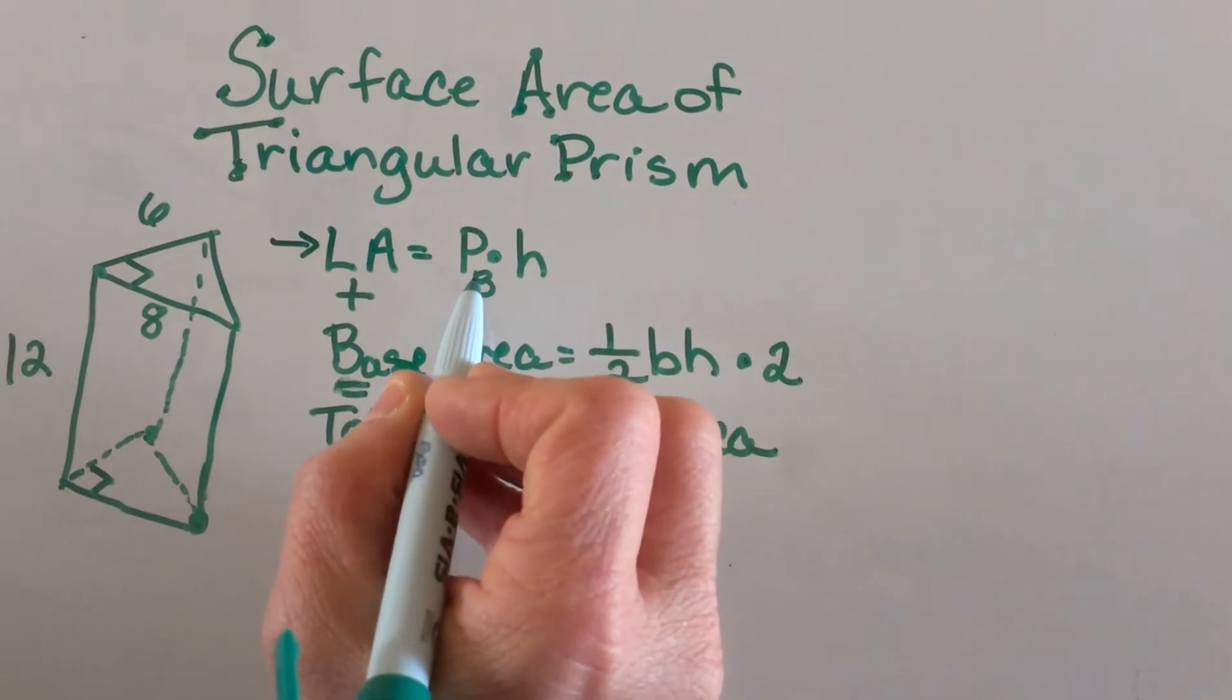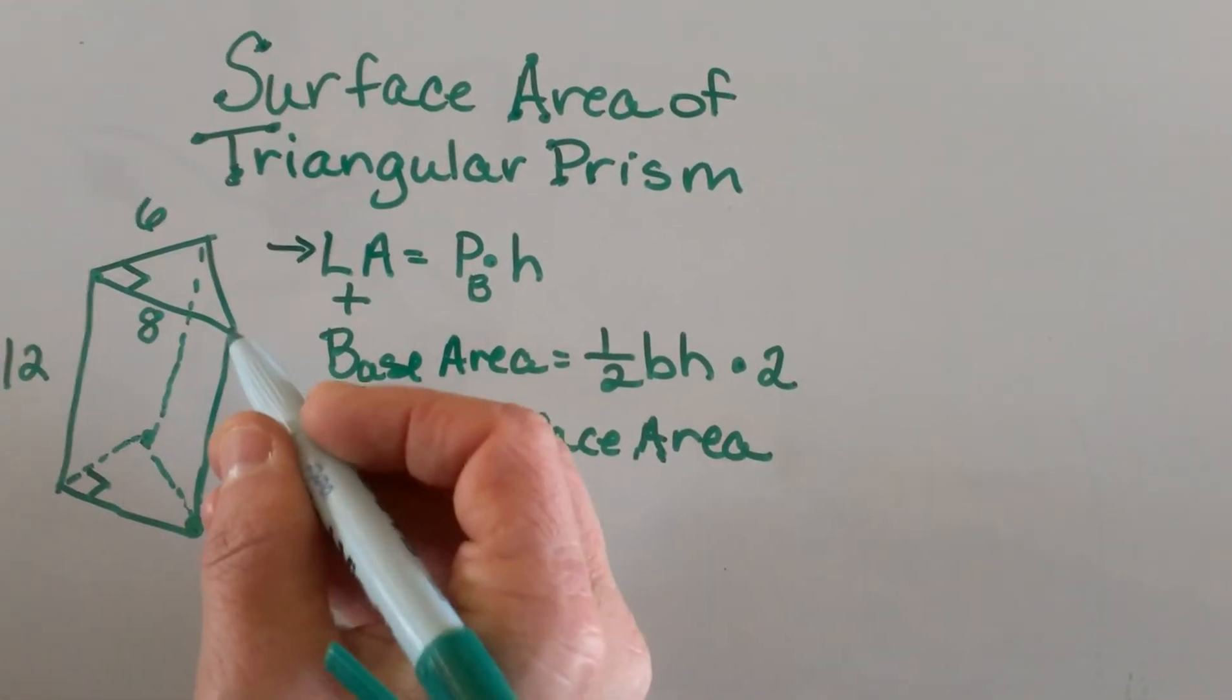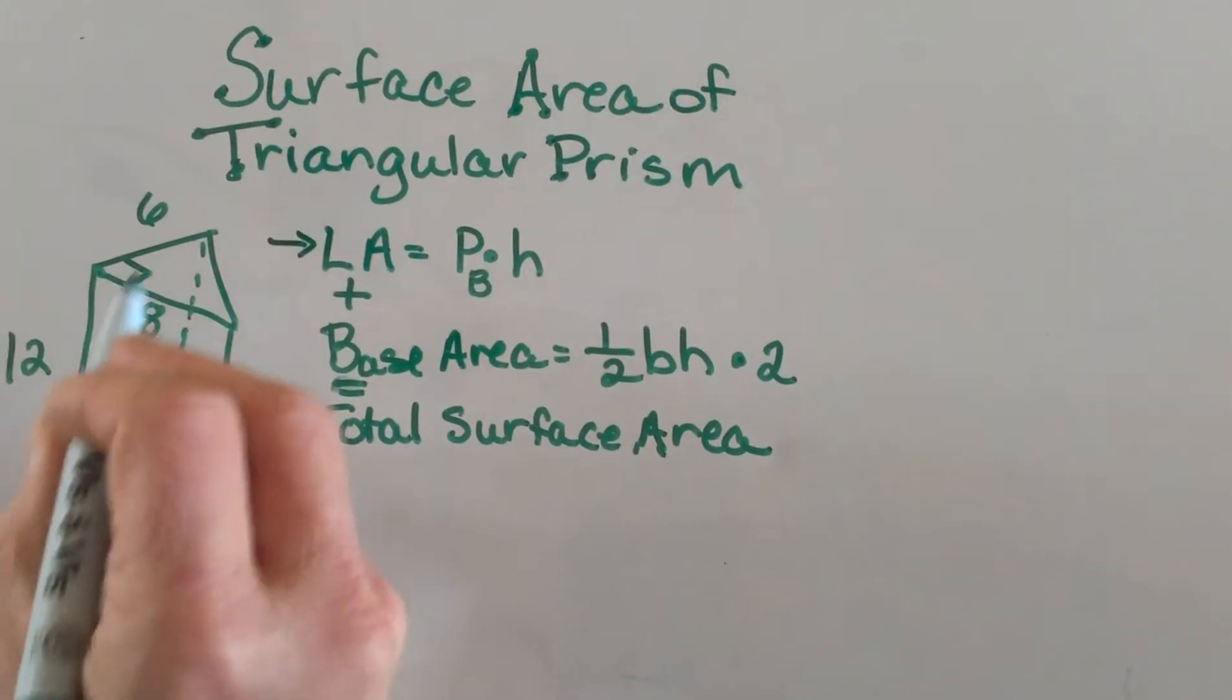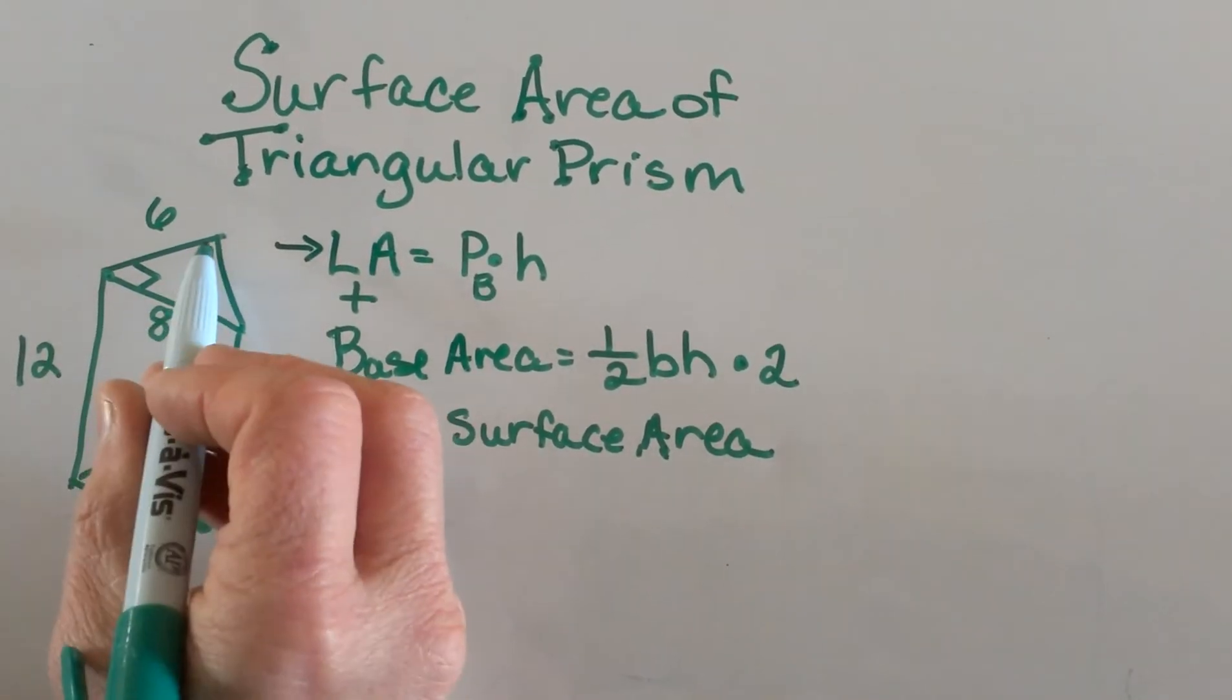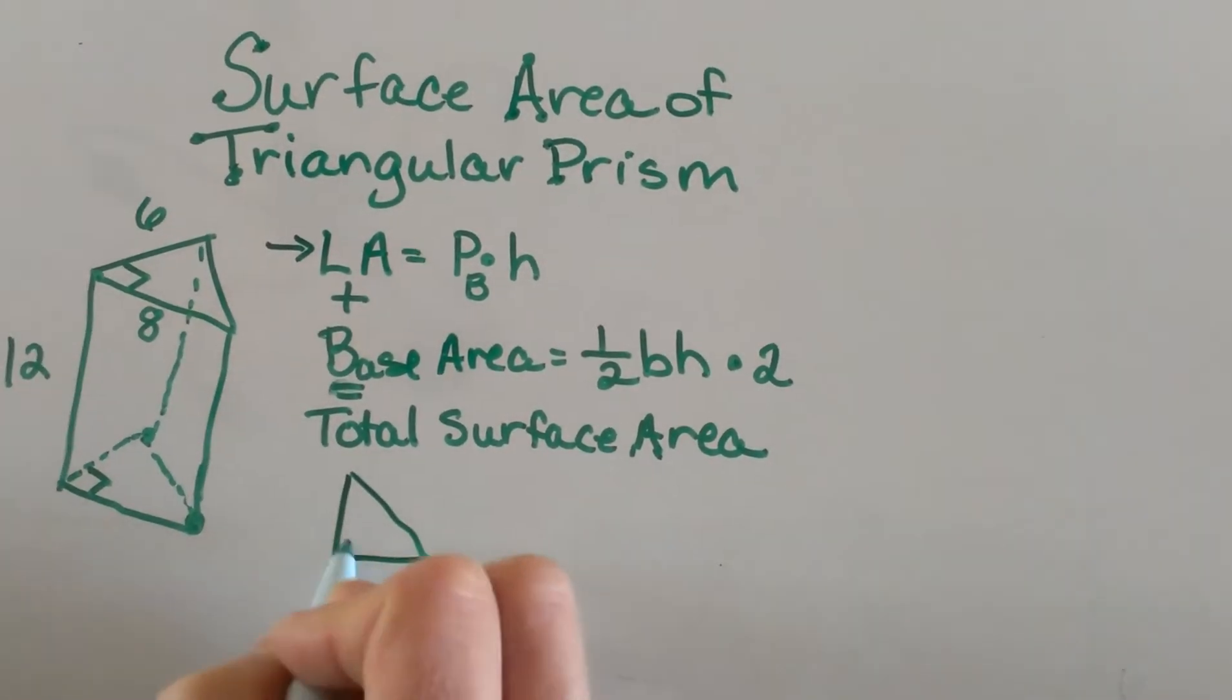Let's start with our lateral area. We need to take the perimeter of our base and multiply it by the height. Our perimeter - well, we've got two out of three sides, so I'm going to draw the base down here so we can take a look at it.